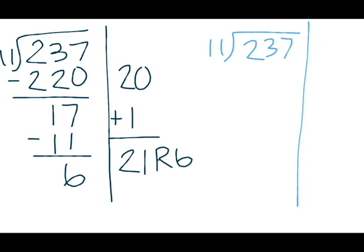I could have estimated that 11 goes into 237 at least 10 times. In that case, I would write 10 in my partial quotient column. I know that 10 times 11 is 110. 110 would be subtracted from 237, and I would get 127.